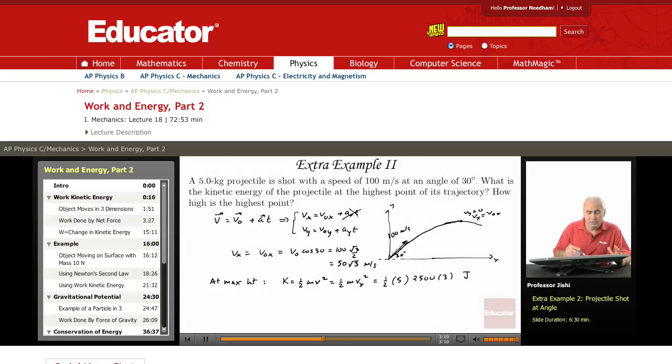And given v0y, which is just v0*sin(30), and given ay, which is just -9.8 meters per second squared, I can find the time to maximum height.